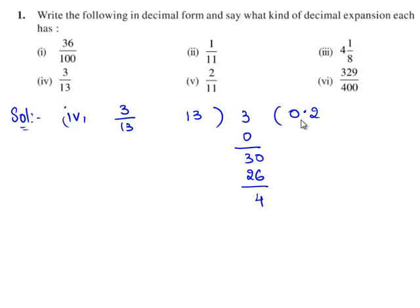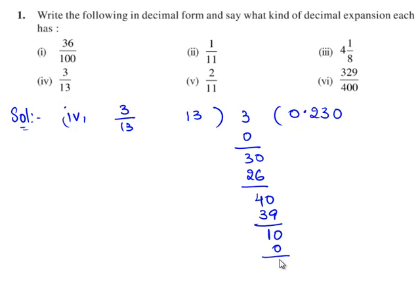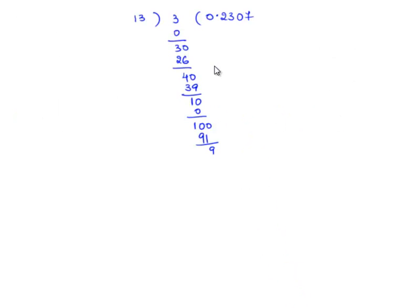We are left with remainder 4. Because of the decimal point, 4 becomes 40. 13 goes in 40 three times as 13 times 3 is 39, and we are left with remainder 1. Since 13 does not go in 1, because of the decimal point 1 becomes 10. 13 does not go in 10, so we take 0. 13 times 0 is 0, therefore we are left with remainder 10. Because of the decimal point, 10 becomes 100.